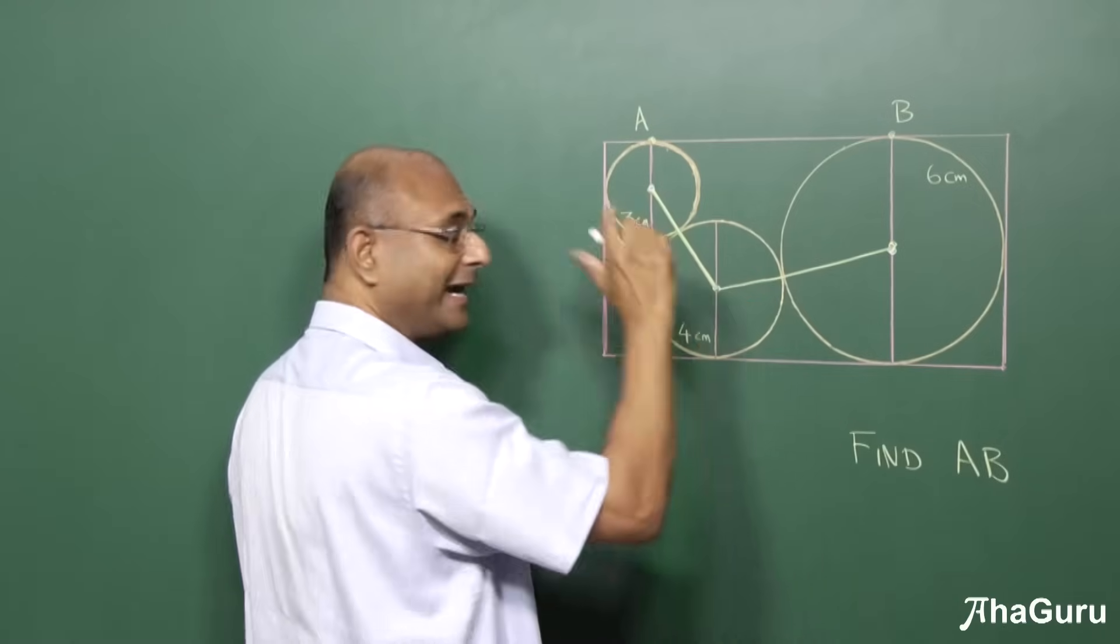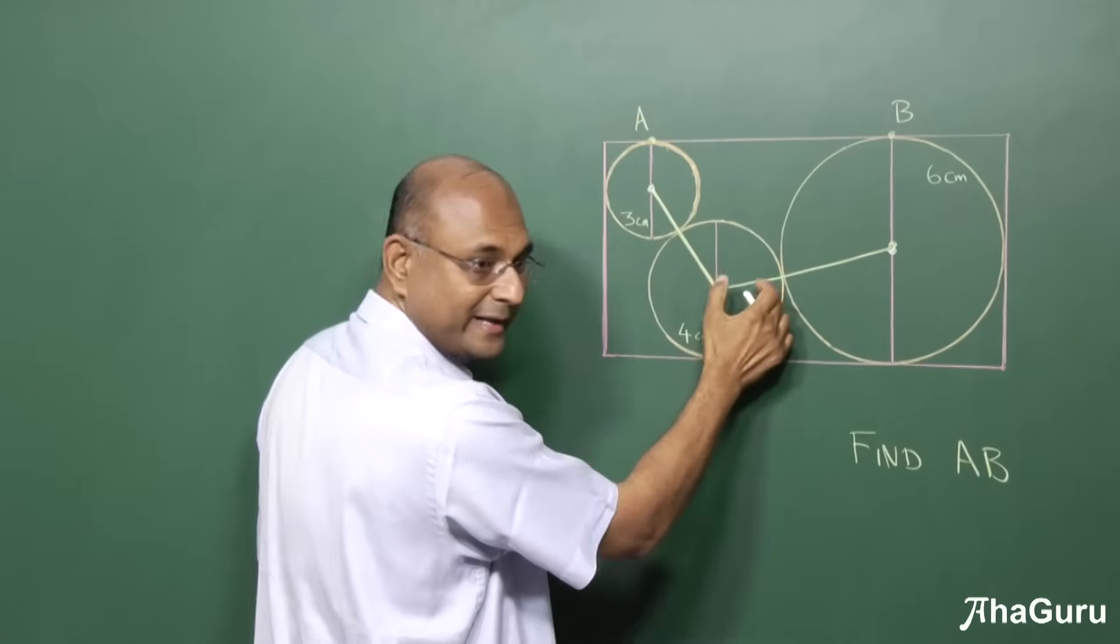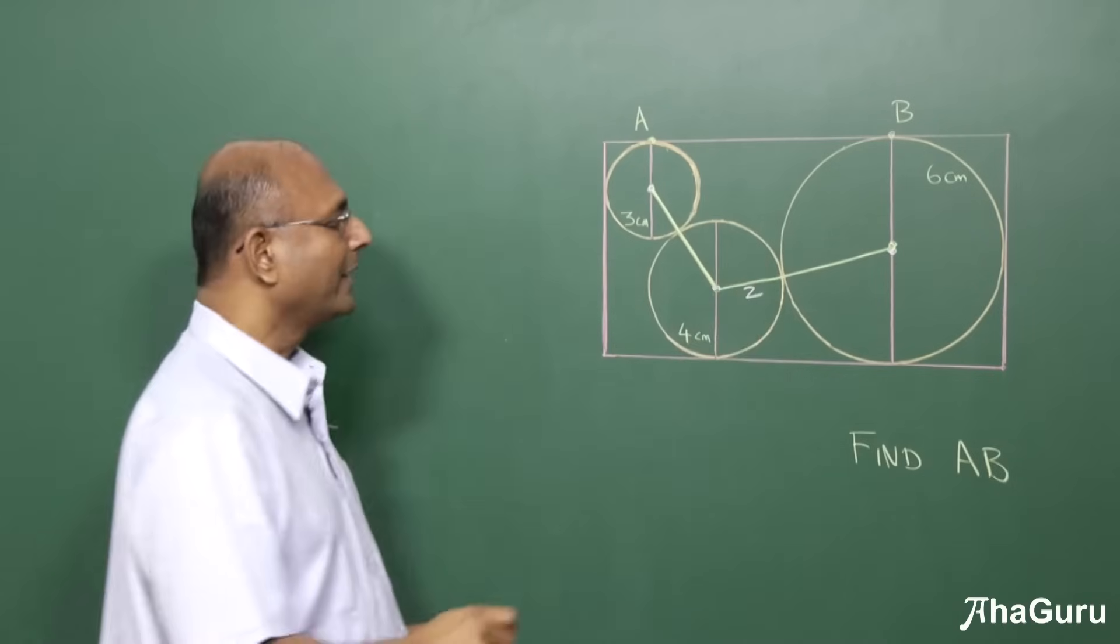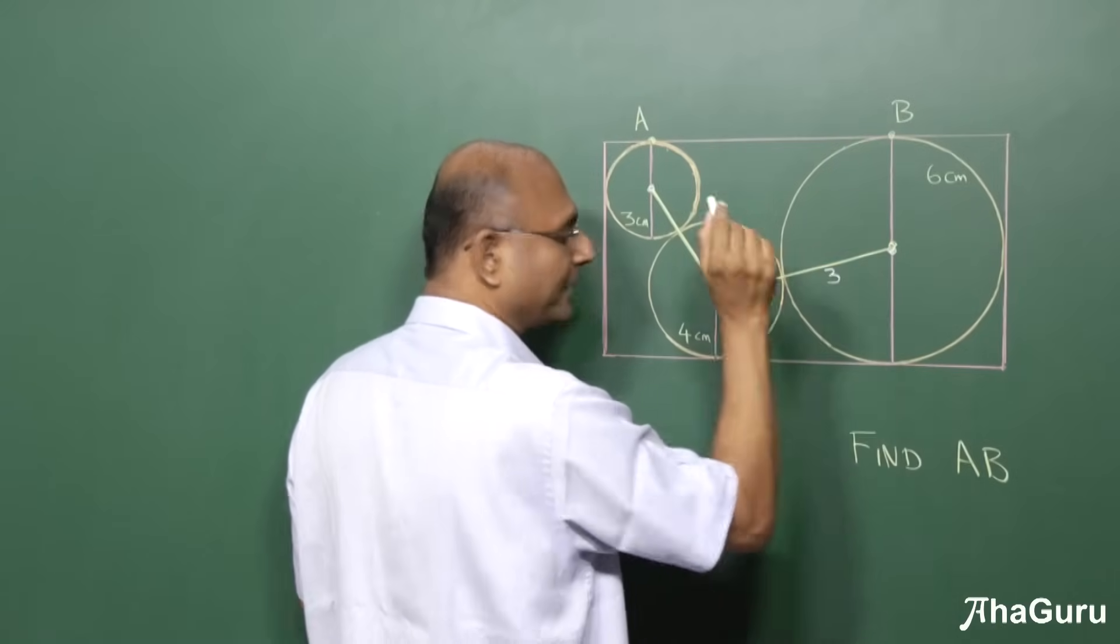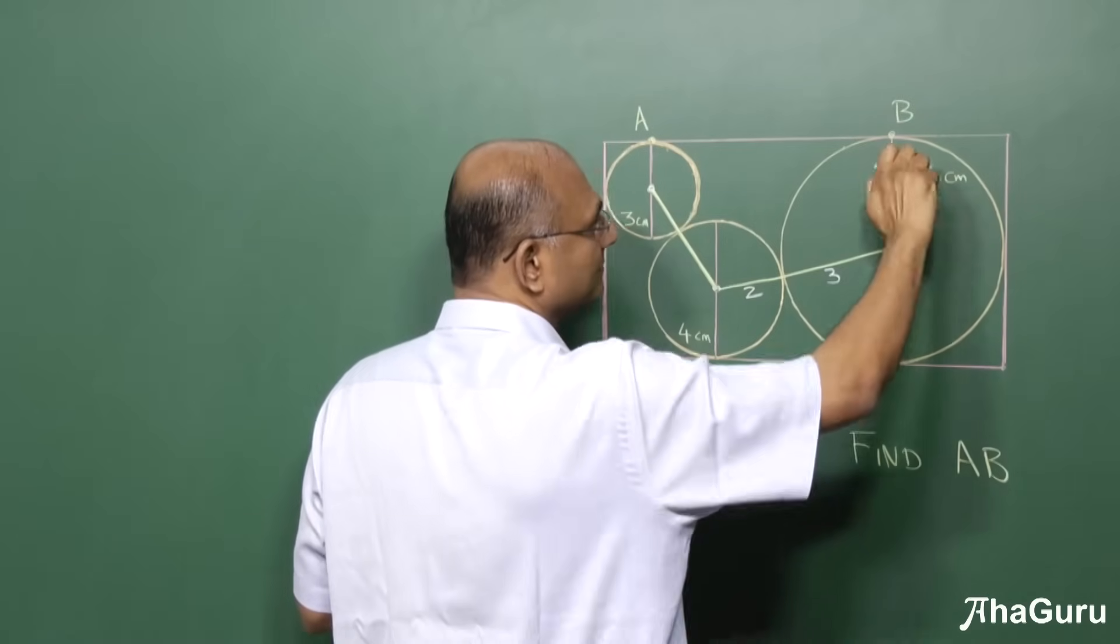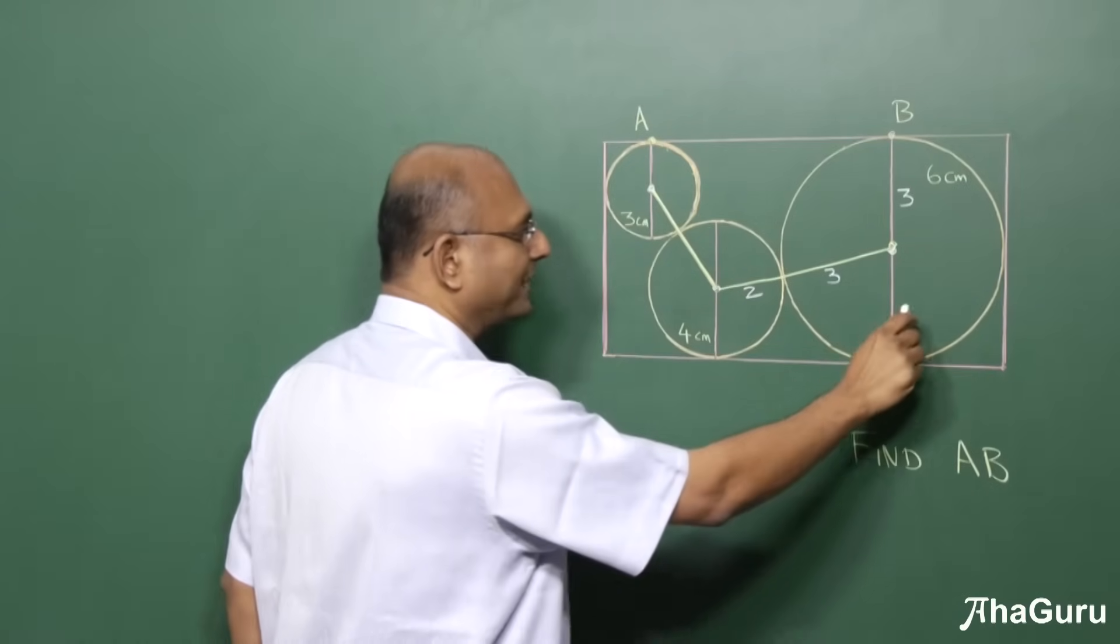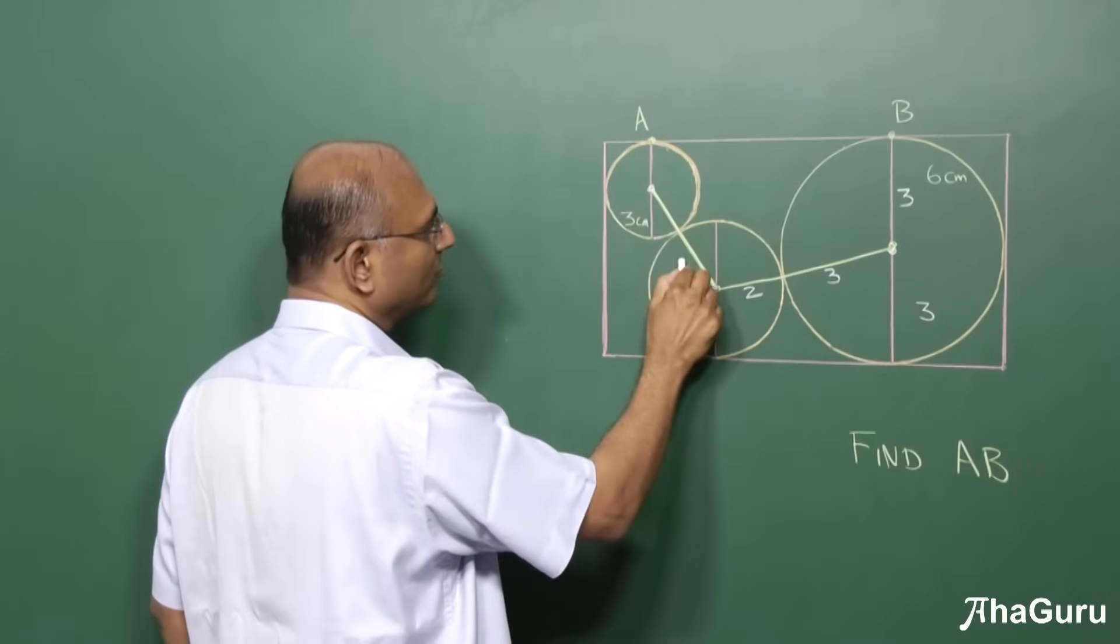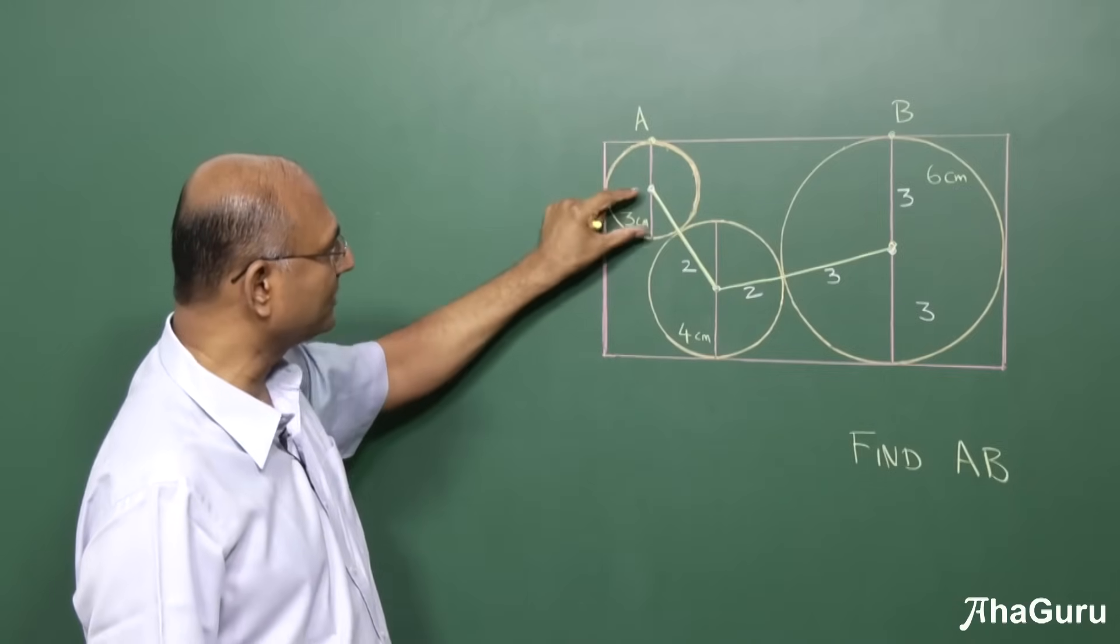Now what is this length? This is the radius length. This whole thing is 4, diameter is 4, so what is the length of the radius? It must be 2 centimeters. And what about this? This is 6, that's 3. This is also 3. If this is 3, what do you know about this? 1.5. So if this is 1.5, this is also 1.5.